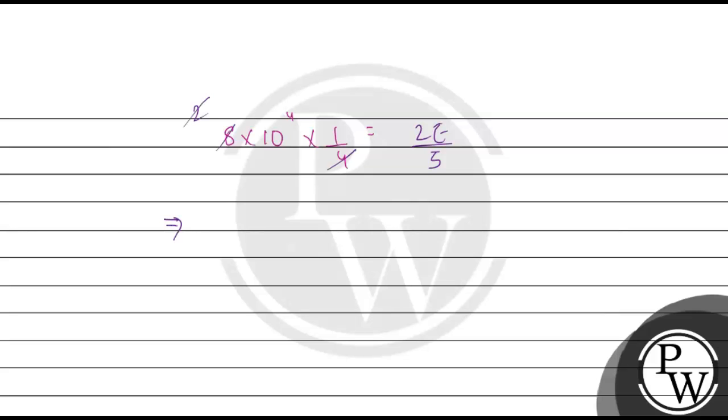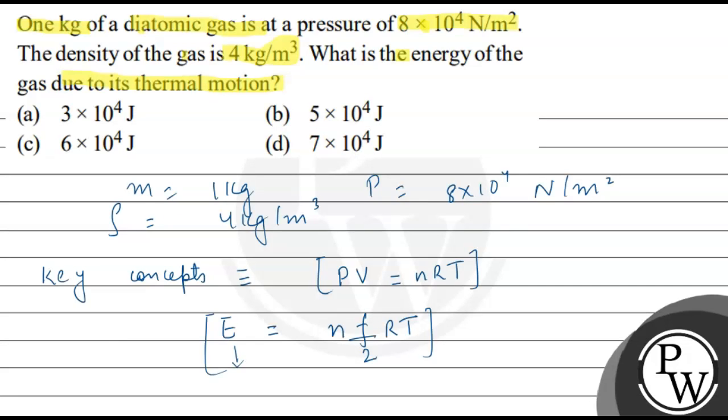8 times 10 to the power 4 times 1 by 4, divided by 2. 2 and 4 get cancelled. E is equal to 5 into 10 to the power 4 Joule. Energy due to thermal motion is 5 into 10 to the power 4 Joule. The correct option is B. I hope you will understand. Thank you.